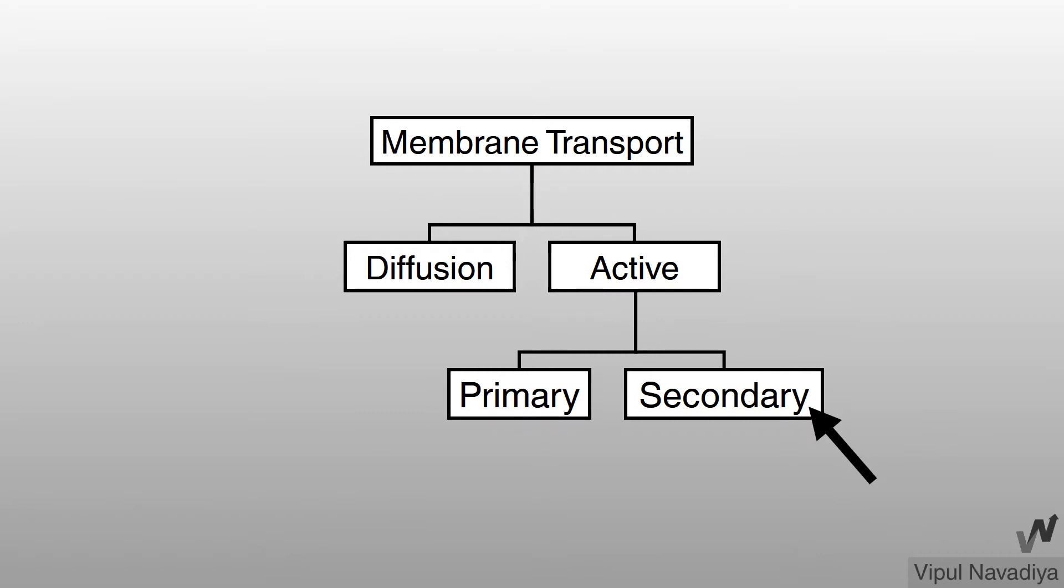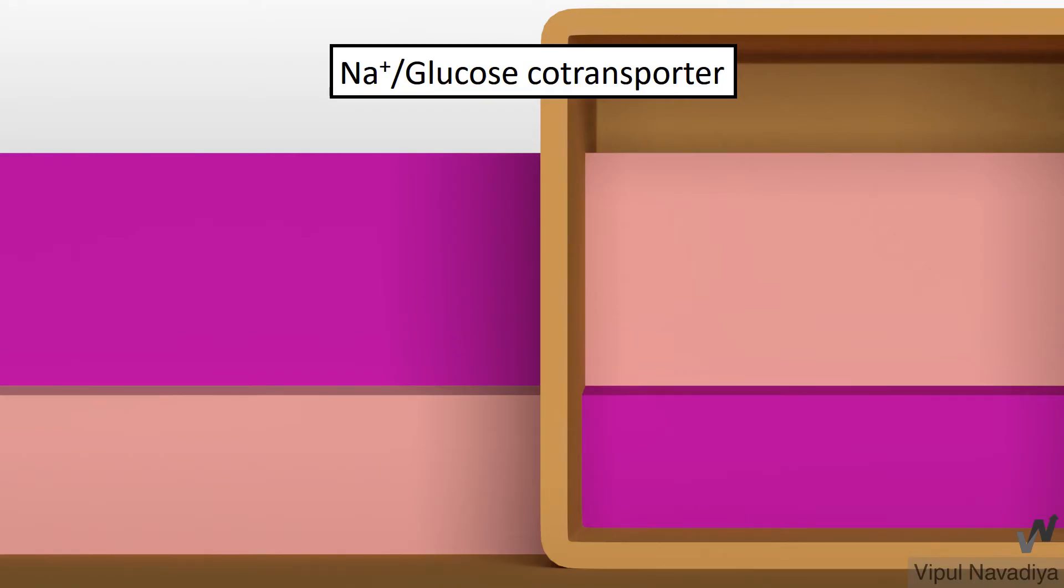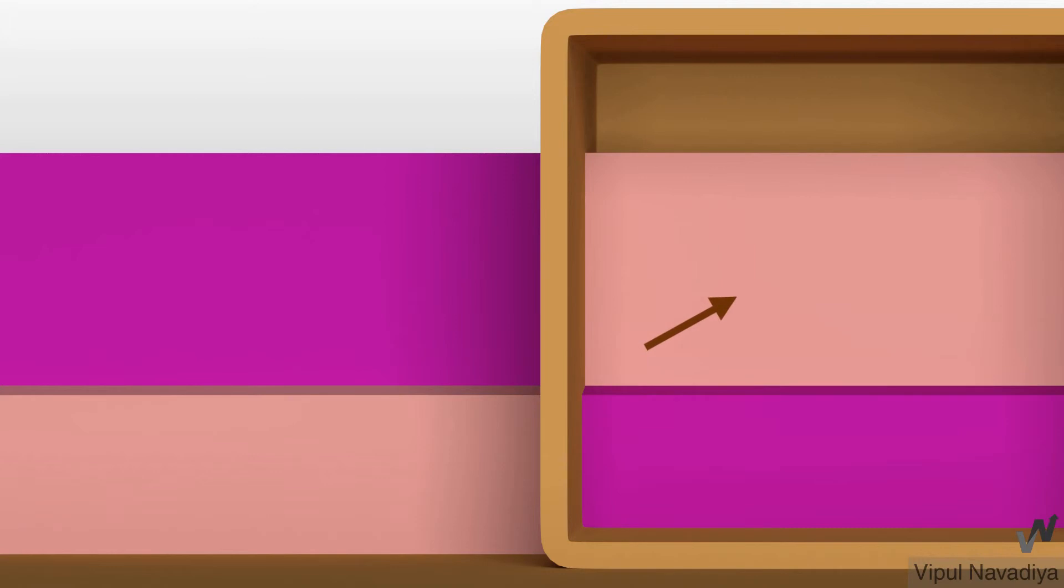Now, let's go to secondary active transport. Here also, substance is transported against its electrochemical gradient. But, energy is obtained from passive movement of other solute. Let's take example of glucose transport by sodium glucose co-transporter. Here, sodium concentration is higher outside than inside and glucose concentration is higher inside than outside. Now, if we want to move glucose from outside to inside against its concentration gradient, we will need energy. Here, this energy will come from movement of sodium ions. Sodium concentration is already higher outside than inside. So, sodium ions have natural tendency to move from outside to inside. As they move, they energize this transporter. This transporter uses this energy to move glucose against its concentration gradient.